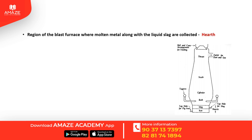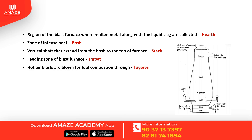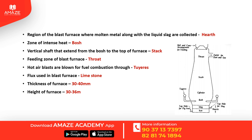In a blast furnace, molten metal is collected in the slag region, and the zone of intense heat is made in a tuyere. The top of the furnace extends as a vertical shaft, and the feeding zone is at the top. The blast furnace is provided with inlets through which hot air blasts are blown for fuel combustion. Flux used is limestone. Thickness of furnace is 30–40 mm, height is 30–36 meters, and diameter is 6–8 meters.